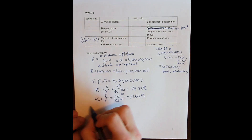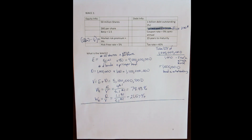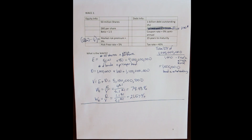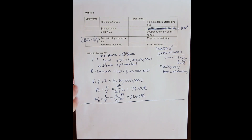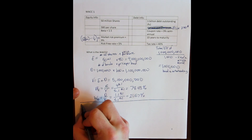Now that I have my capital structure weights, what remains is to calculate the cost of capital for both equity and debt, and then use all of that to calculate the weighted average cost of capital. It doesn't matter what order you go in, but we'll start with the cost of debt.